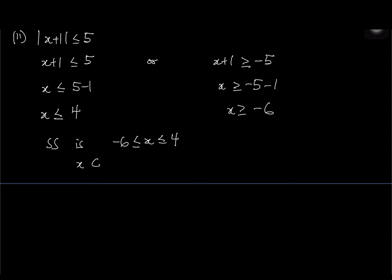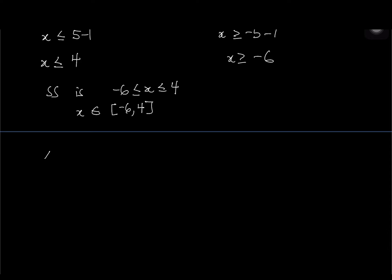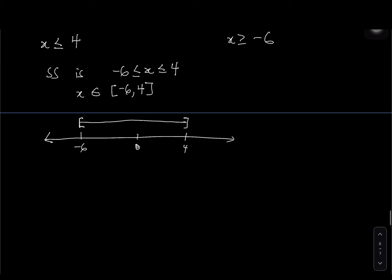In interval notation for question 11: x belonging to [negative 6, 4] using brackets because of the less-than-or-equal-to signs. On the number line, use closed brackets at negative 6 and 4 and join with a line.